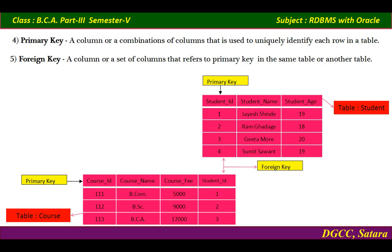In the student database, the student table stores student data with primary key column student_id. The course table holds information about various courses and associated students. To link these two tables and determine student and course information, the student_id column is inserted into the course table, referencing the existing student_id from the student table. This student_id in the course table is the foreign key, demonstrating a relation between the student and course tables.